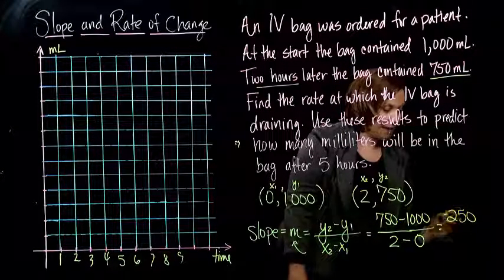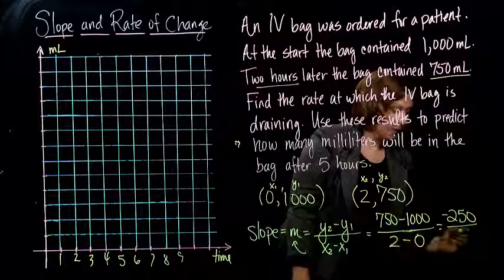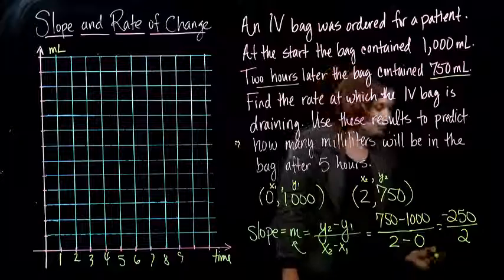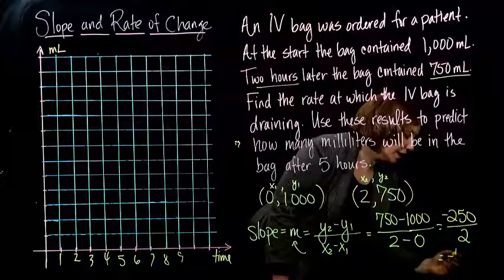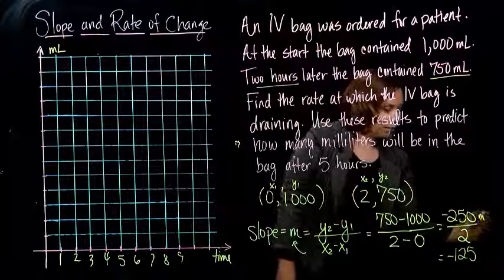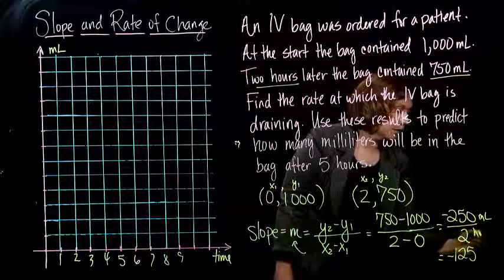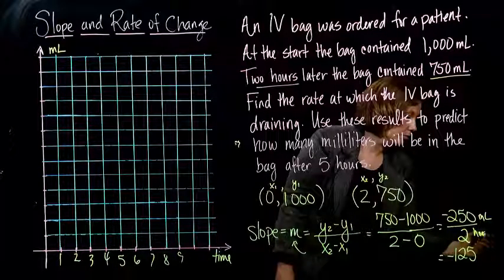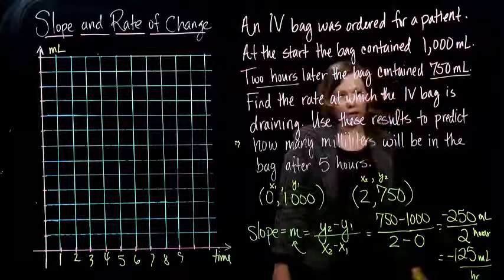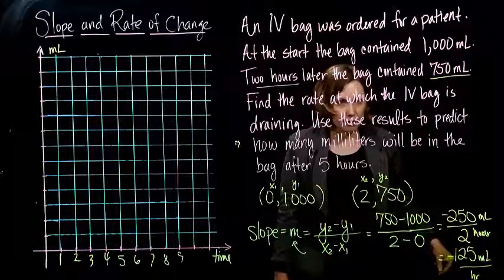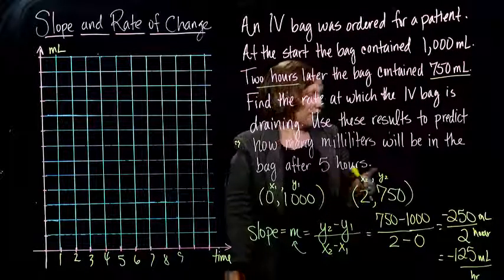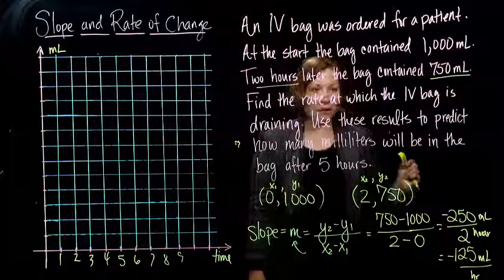So 750 minus 1,000 gives me negative 250, and 2 minus 0 is 2. So if I do this division, I get negative 125. So, oh, and I forgot my units. Milliliters per hour. So milliliters per hour. Don't forget your units there. They're kind of important when you're in healthcare. Actually, they're very important. There's a big difference between a milligram and a microgram, right?